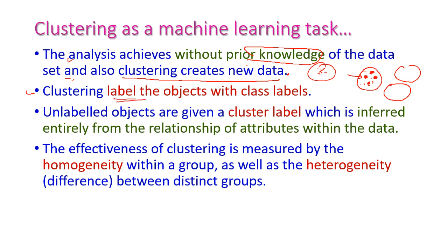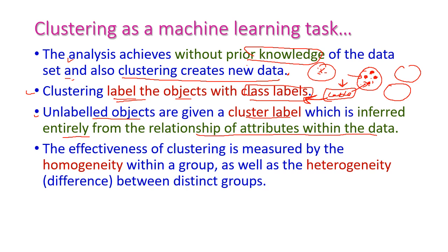The clustering labels each object with a class label. For every object, it produces a label called the class label. In classification, we produce predefined labels, but in clustering this is not predefined — the cluster itself produces a new label after analyzing the internal pattern of data. The unlabeled objects are given cluster labels, which are inferred entirely from the relationship of attributes within the data, based on internal relationships.